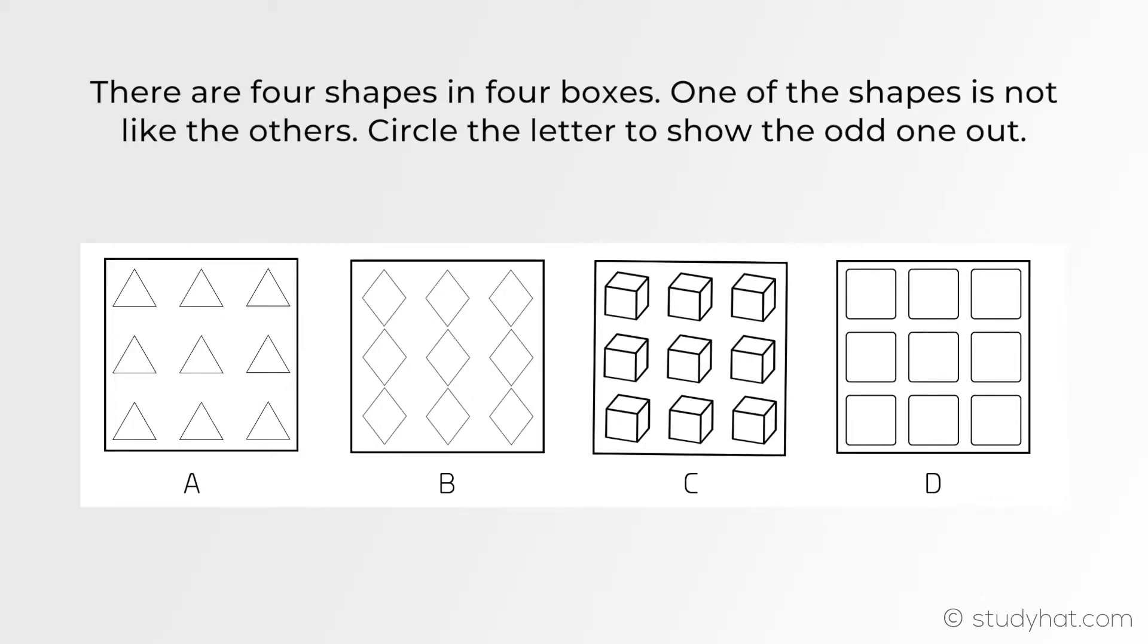So with all that being said, let's start off with example one. There are four shapes in four boxes. One of the shapes is not like the others. Circle the letter to show the odd one out. Okay, now going back to the first step of our approach, it was to spot any obvious links. Straight away I can see that each figure has nine shapes inside of it, so I'll make a note of that on the side.